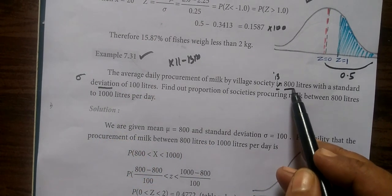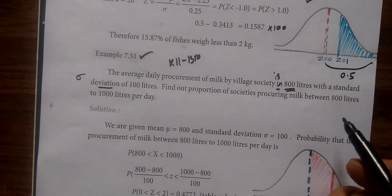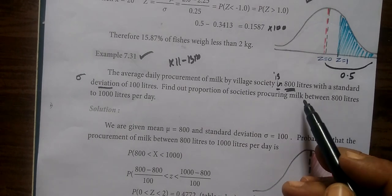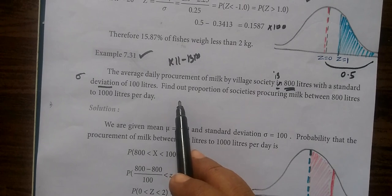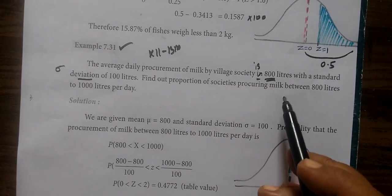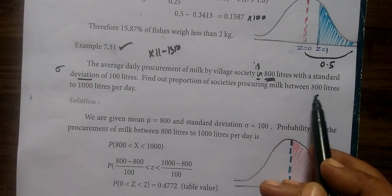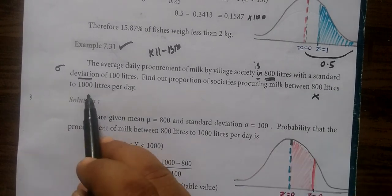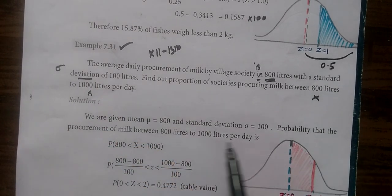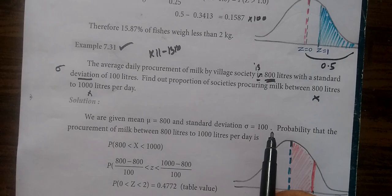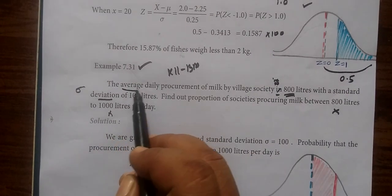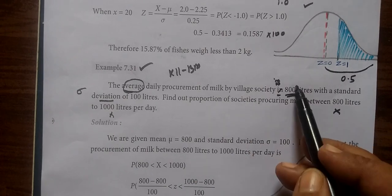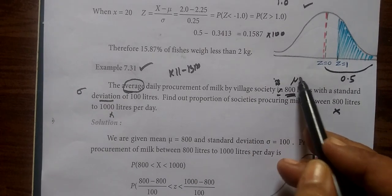This is 800 liters. Then find out the proportion of society's proclaiming milk between the x values. The mean is the average. This is the complete average.